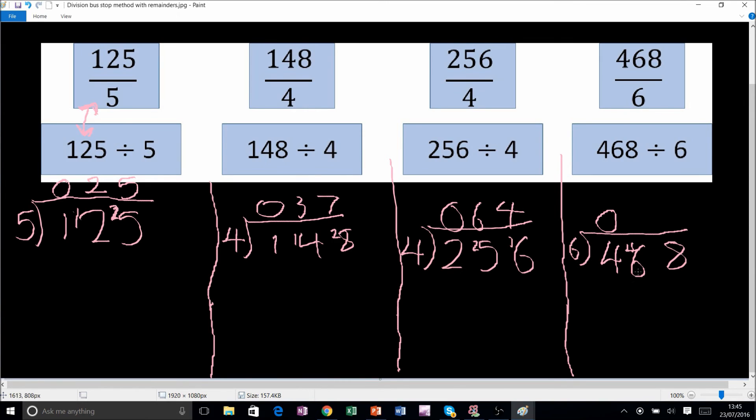We say how many sixes go into 48? And it is actually eight. So guys, as you've seen, division with the bus stop method, even when we do have some remainders at times, still isn't too bad.